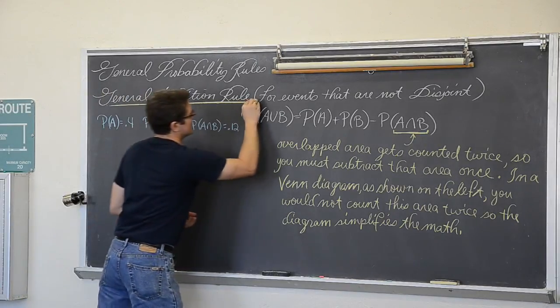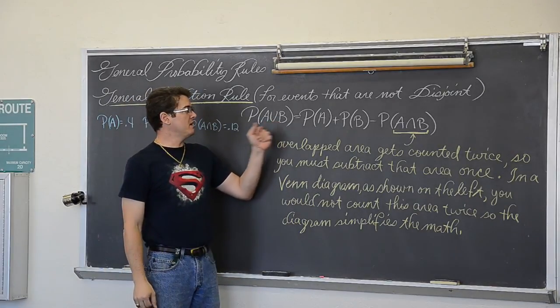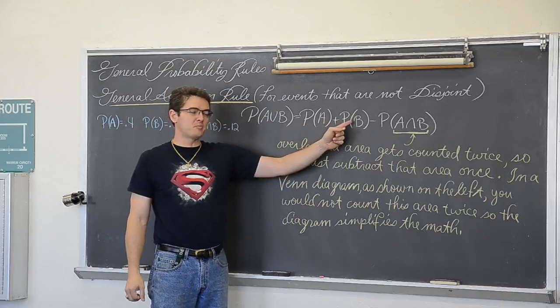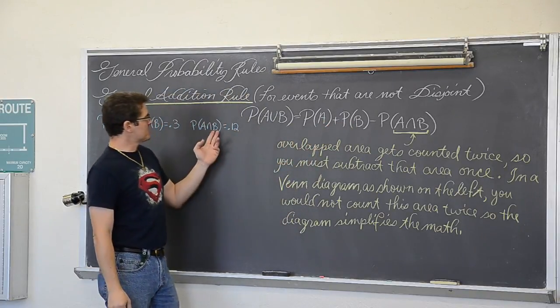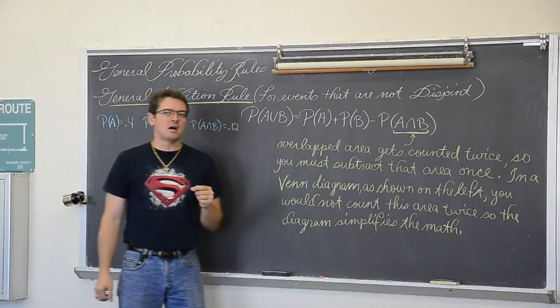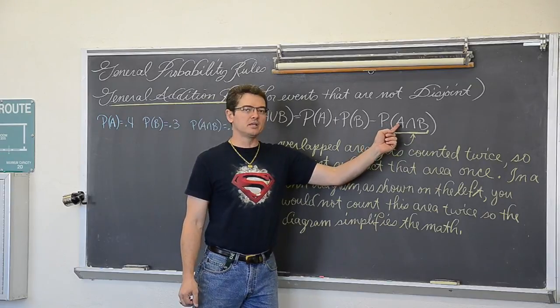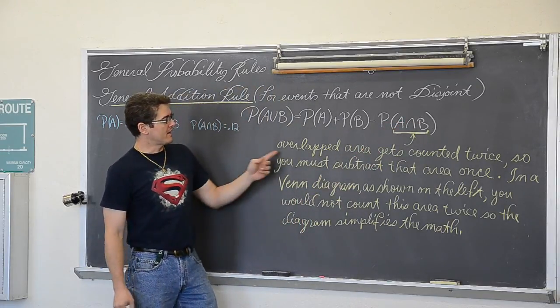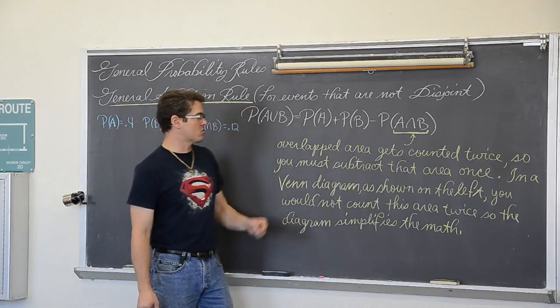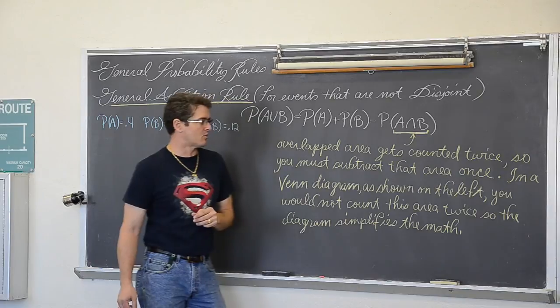That says that the probability of A or B equals the probability of A plus B, but if I just do A plus B and those events have a chance of occurring at the same time, that overlapped area is going to get counted twice. So we are going to have to do minus the probability of A and B occurring together. So that overlapped area is counted twice, so you must subtract that area once to cancel out the double count.